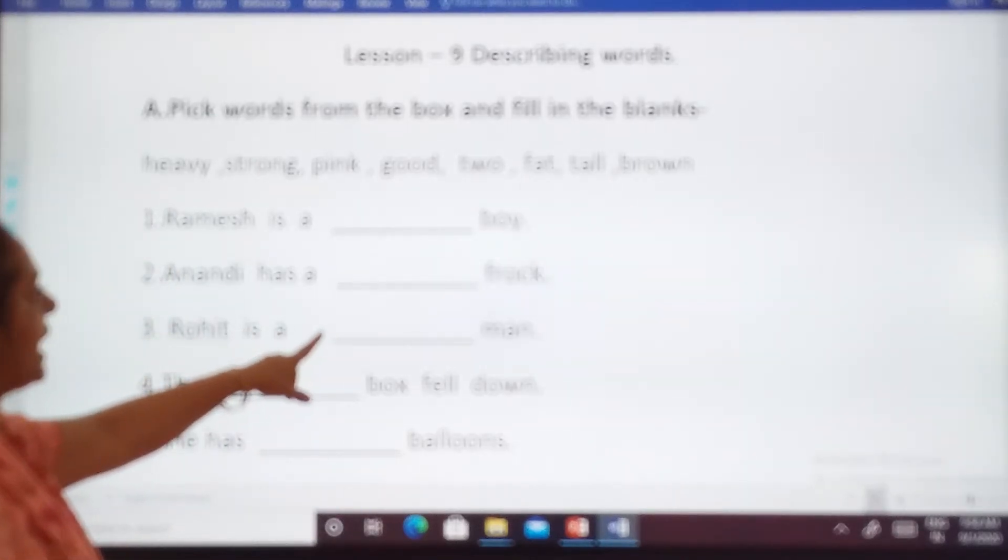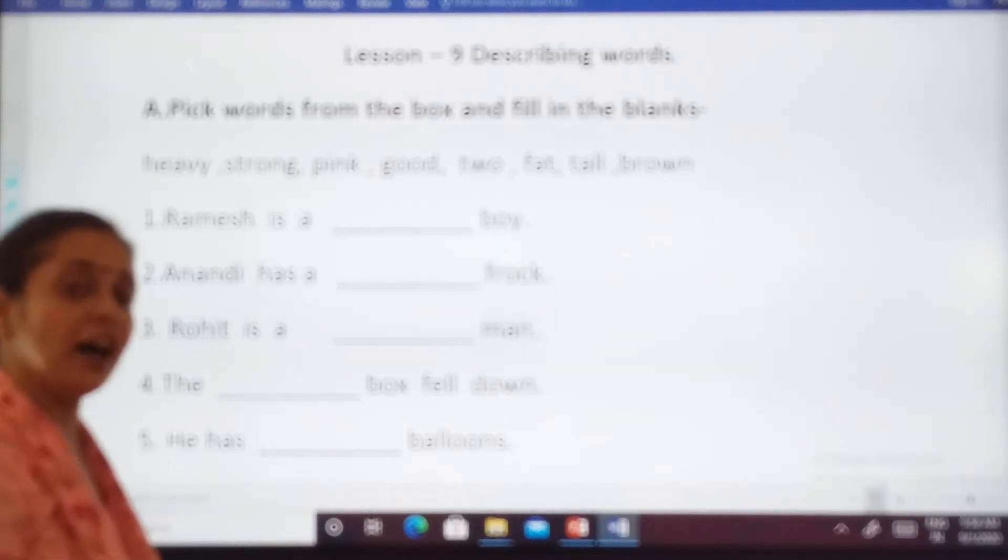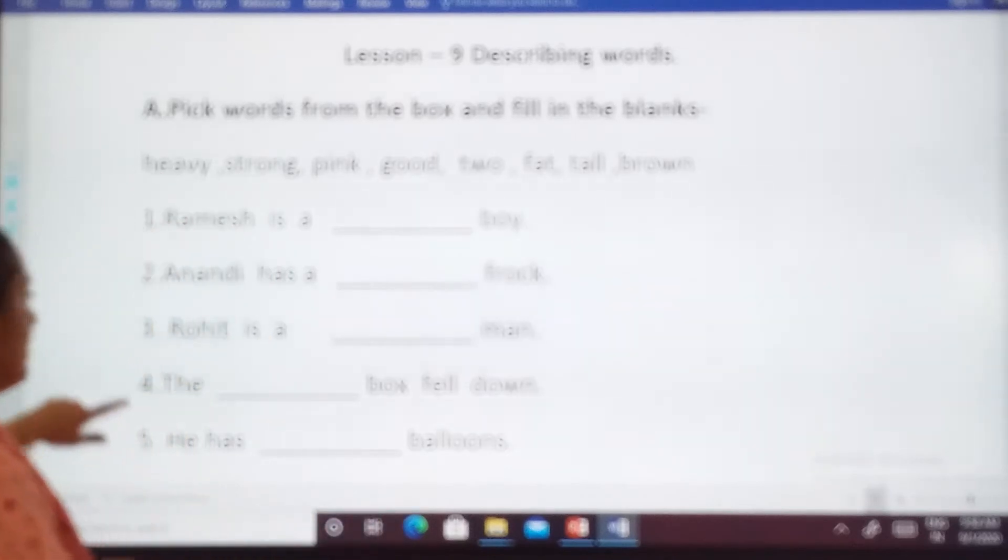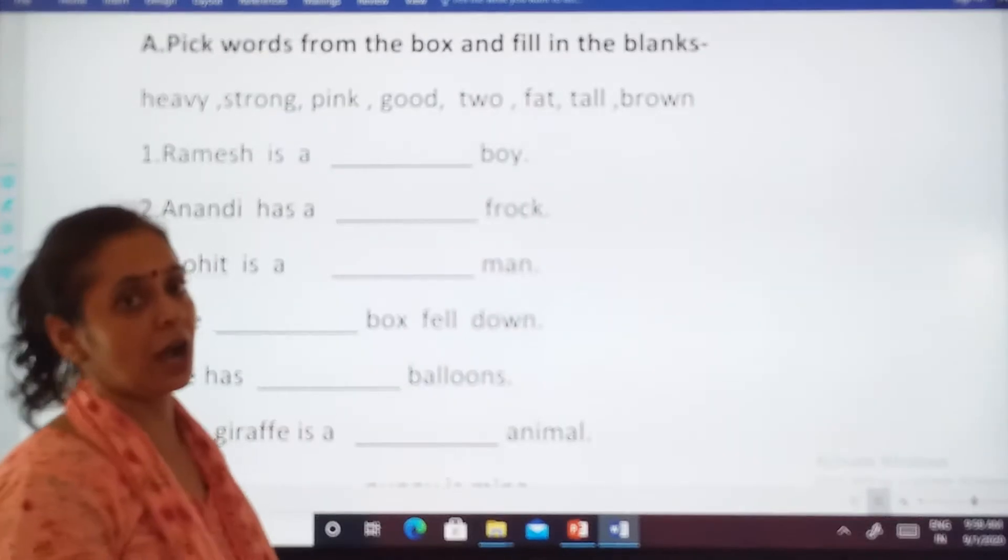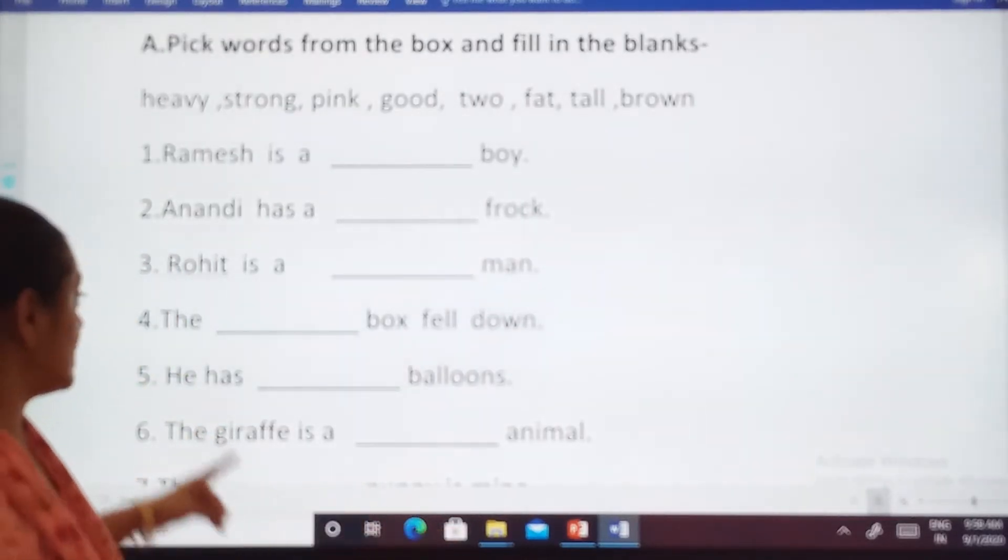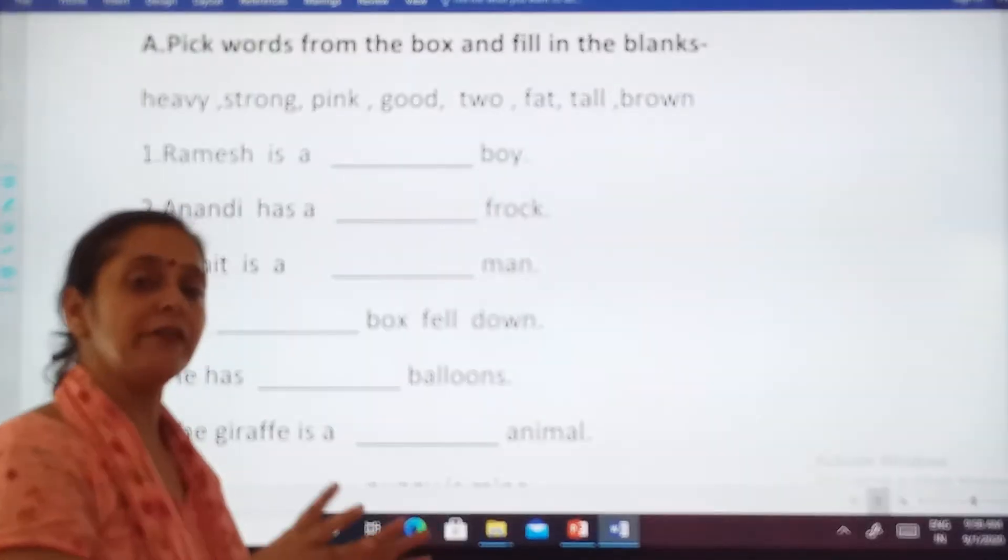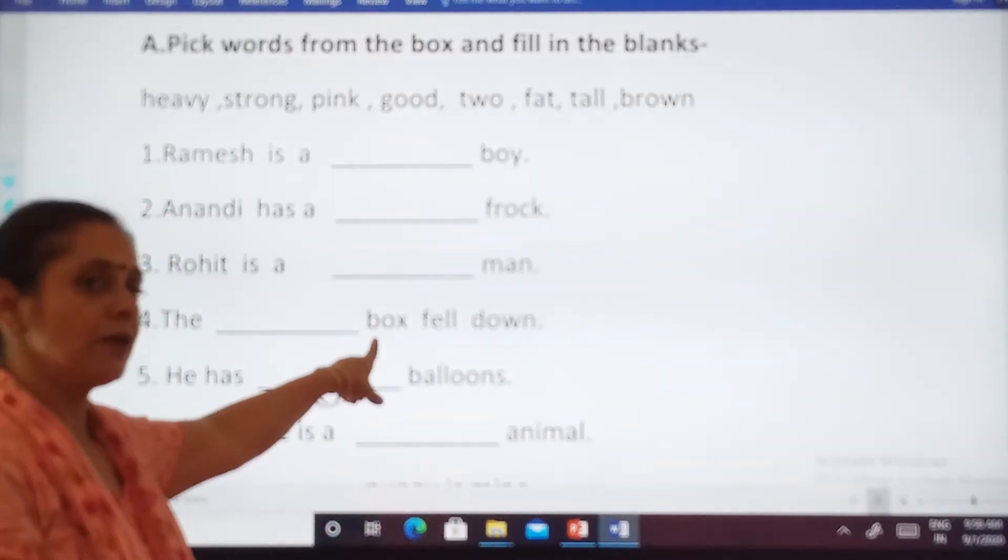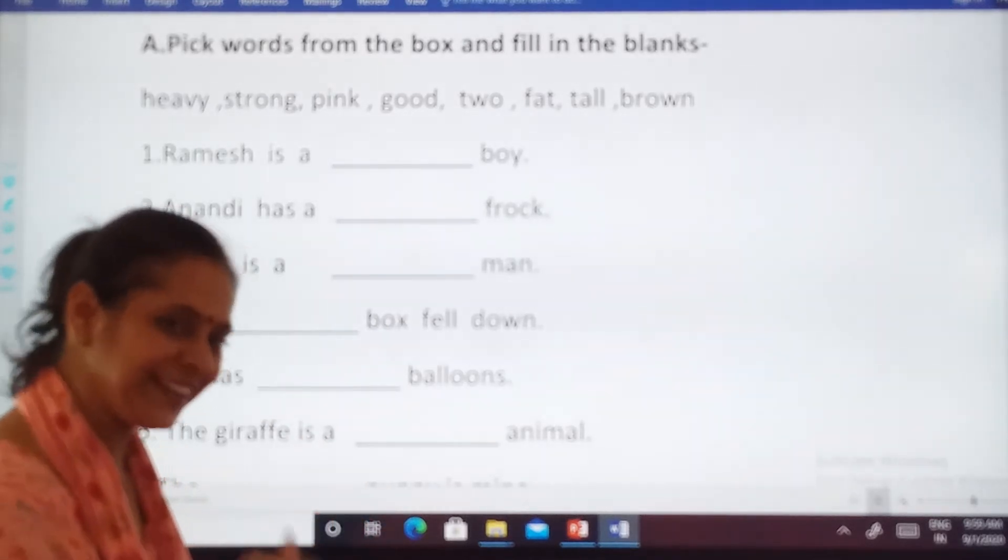Rohit is a dash man. Yes, yes. He is a fat man. Rohit kya hai? Fat hai. We move to the another one. The dash box fell down. The dash box fell down. Ones a box tha? Heavy tha na? Yes. The heavy box fell down. So, heavy is a quality of a, describes the quality of a box. Aakko samajh mahi aya ke kya hota hai describing marks.